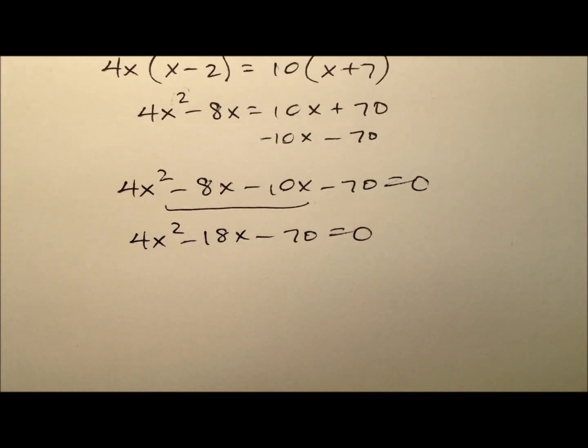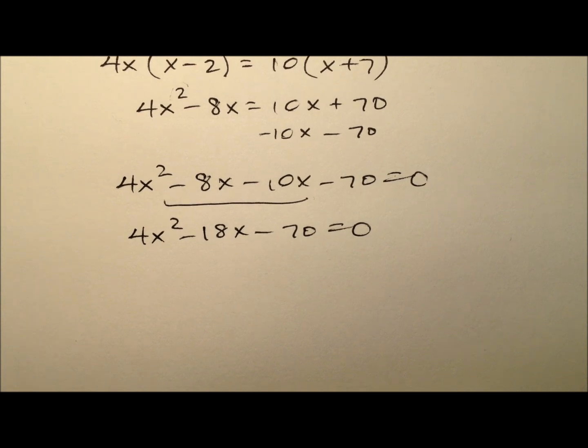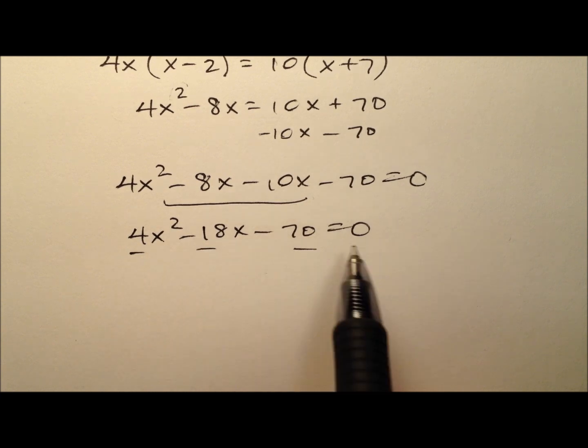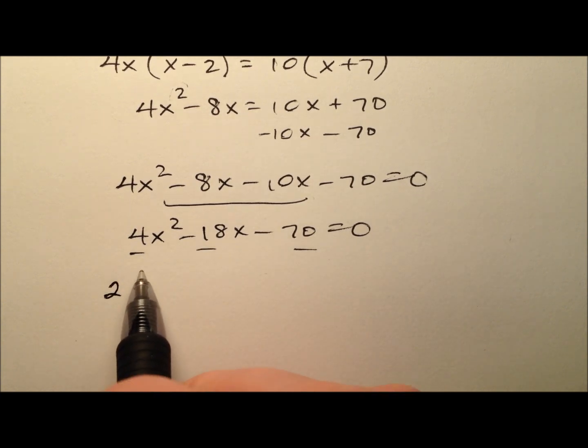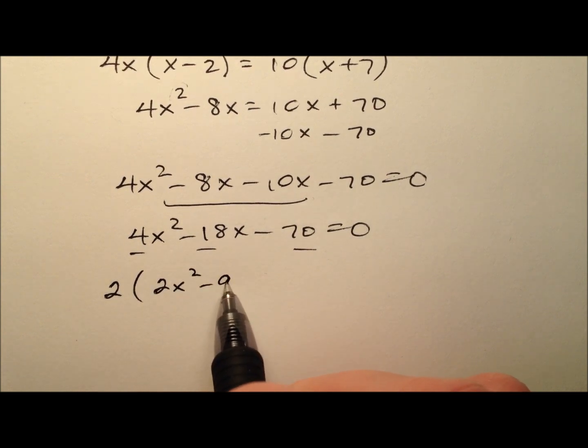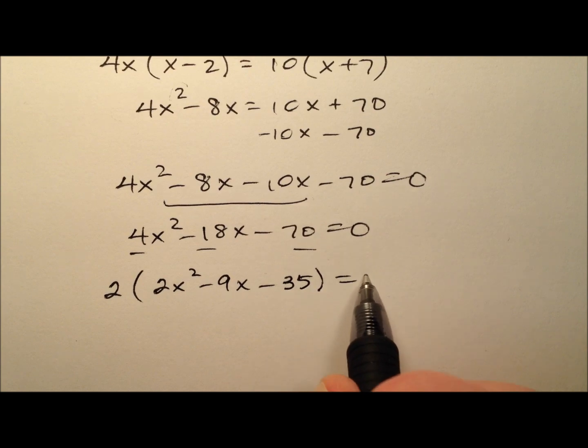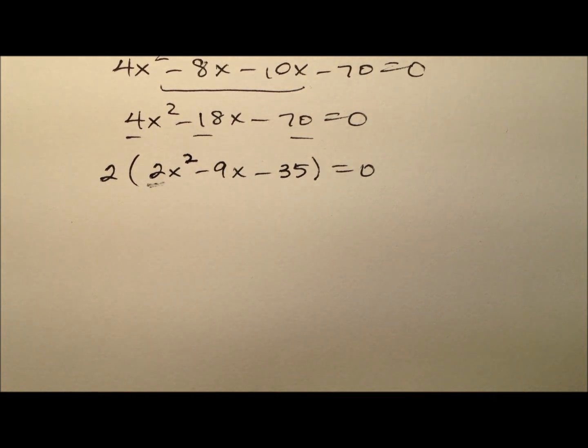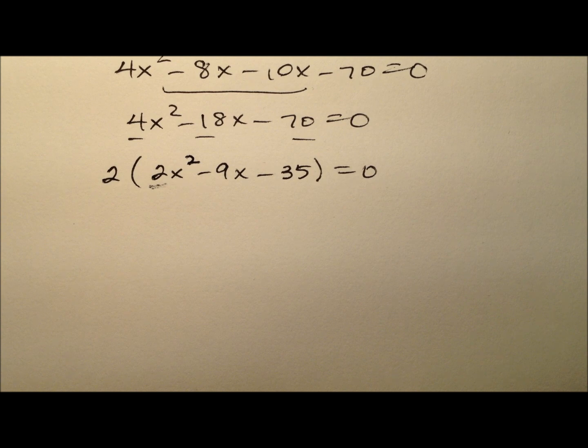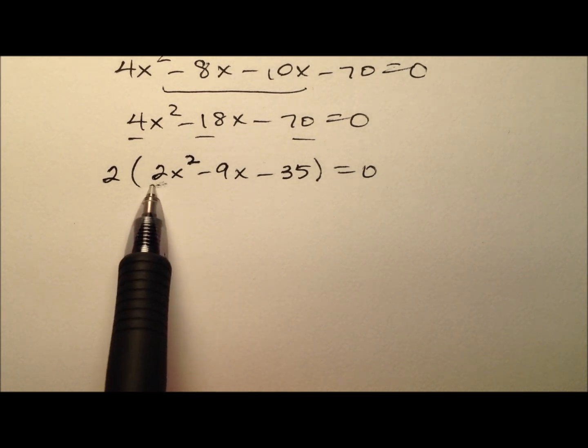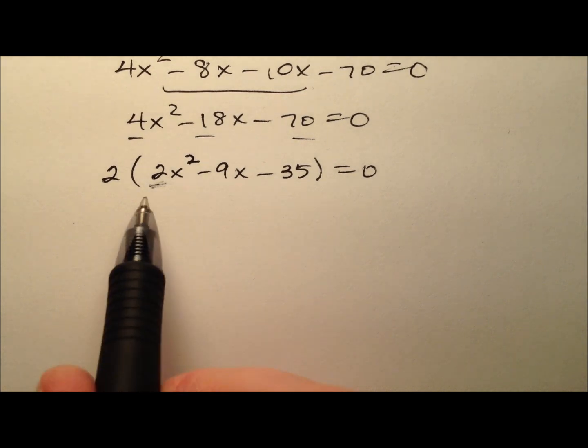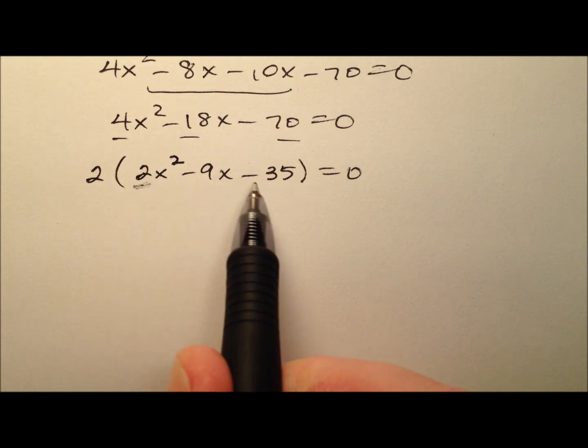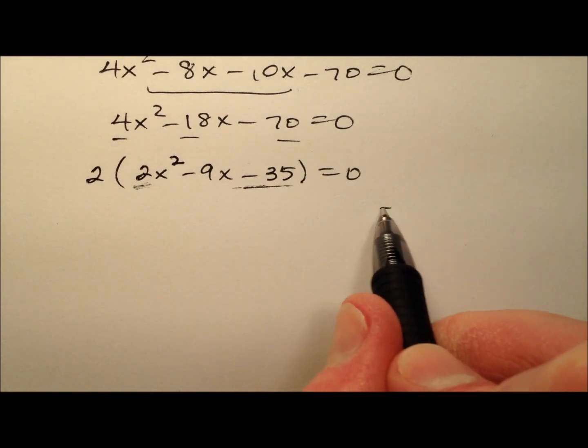Our job is to solve this and it looks like we can probably do so by factoring. You'll notice the numbers here, 4, 18 and 70 are all even. So let's take a greatest common factor of 2 out. That makes it easier because all these numbers are a little smaller and that's nicer to work with. So we'll see that this leading coefficient is not 1. So we'll need to factor this using a method. Let's use the AC method. This is definitely the one I prefer. Down in the description for this video is a link where you can find out more about this AC method and how I'm doing it and why I'm doing it this way.